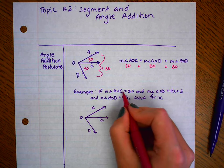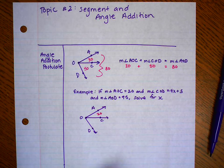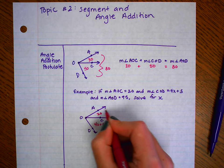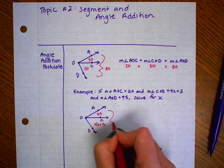And our problem says that the measure of angle AOC is 20, the measure of angle COD is 4X plus 5, and the measure of angle AOD, the big outside one, is 95.